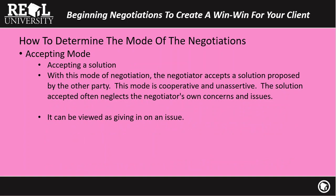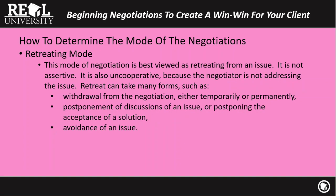The acceptance mode obviously neglects anybody's own concerns — it is viewed as giving in. A lot of times, sellers or buyers will use this simply to try and wear the other person down and hope they give in on a particular topic. The retreating mode is not really assertive — it's usually uncooperative and will lead to the breakdown of the deal altogether. It's typically the avoidance of an issue: 'We're not going to deal with that.' That is the retreating mode.